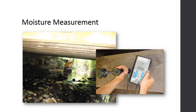Moisture measurements are taken with an electronic hand-held moisture meter consisting of two metal pins driven into the wood. The meter displays electrical resistance between the pins, indicating a corresponding moisture content. Moisture content greater than 20% indicates that enough moisture is present for decay to begin. Moisture measurements provide information on areas where water is being trapped, such as joints, and serve as an indicator that a more thorough assessment of high-moisture areas is necessary.